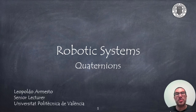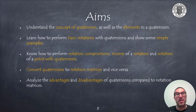In this video I will introduce quaternions as an alternative to represent 3D rotations, widely used in robotics, but also in other fields such as computer graphics. The aims of the presentation are to understand the concept of a quaternion as well as its elements. We will learn how to perform basic rotations, rotation composition operations, the inverse of a rotation, the rotation of a point with quaternions, and the conversion between quaternions and rotation matrices. Finally, we will analyze the advantages and disadvantages of using quaternions compared to rotation matrices.